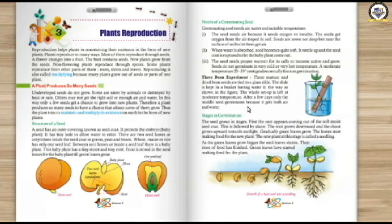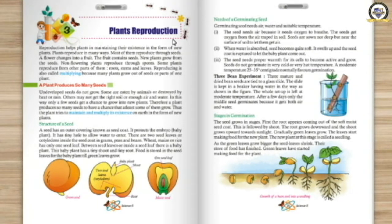Good morning everybody. We are here to learn science, Chapter number 3: Plant Reproduction. We have already learned the different methods of reproduction — what reproduction is, also known as multiplying. We also learned reproduction by seeds.